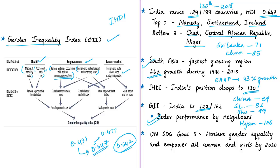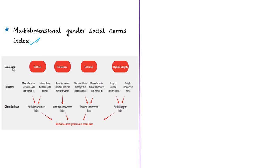Despite better performances by neighboring countries, persisting gender inequality remains worldwide. This data is concerning in light of UN Sustainable Development Goal 5, which aims to achieve gender equality and empower all women and girls by 2030. The report projects it may take 202 years to close the gender gap in economic opportunity. The report also introduces a multi-dimensional gender social norms index indicating how prejudices and social beliefs obstruct gender equality.